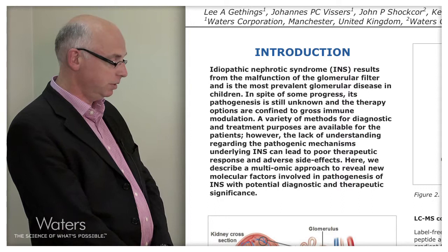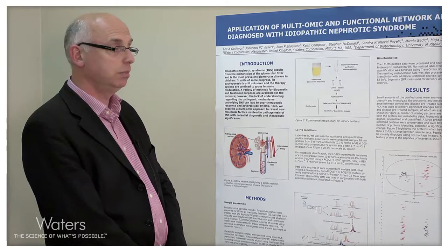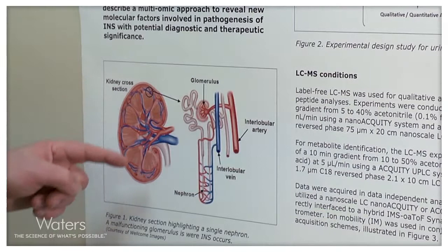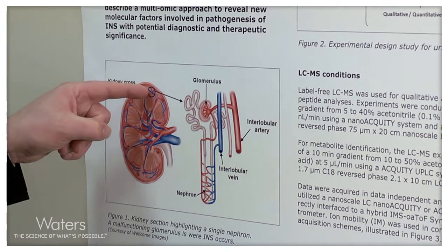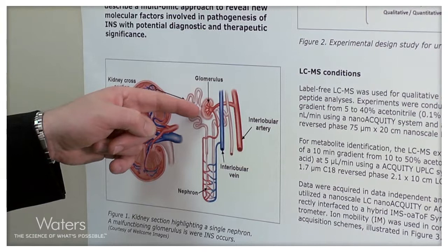We're interested in using our state-of-the-art analytical approaches from Waters Corporation to really look at this disease and to understand if we can identify some of the molecular mechanisms underpinning it. Figure 1 shows a kidney cross-section highlighting the structure of the kidney where we have the glomerulus, which is really impacted by idiopathic nephrotic syndrome in young children.